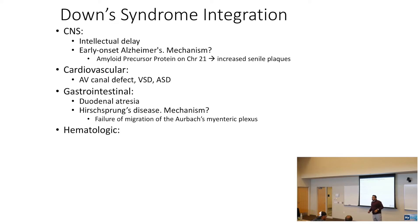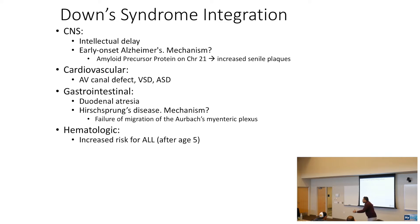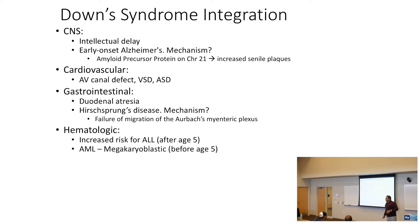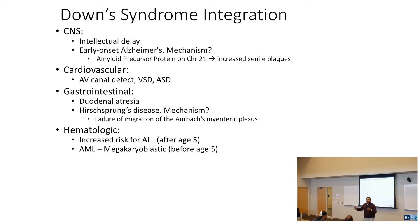Hematological associations with Down syndrome: increased risk of ALL after age five. Before age five, it's AML — megakaryoblastic — because megakaryoblasts are precursors to platelets. Before age five, think platelet-like, so megakaryoblastic. Mnemonic: Down syndrome — we all FALL down, A-L-L, Down syndrome.